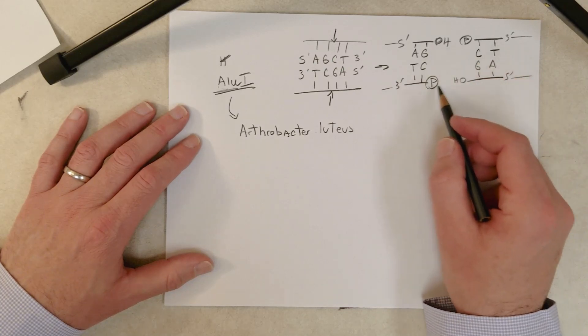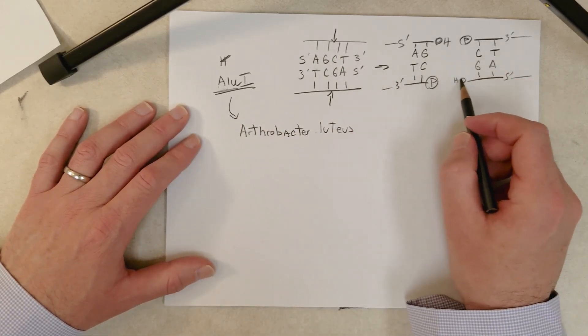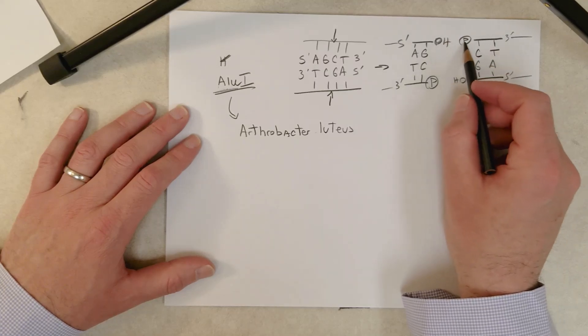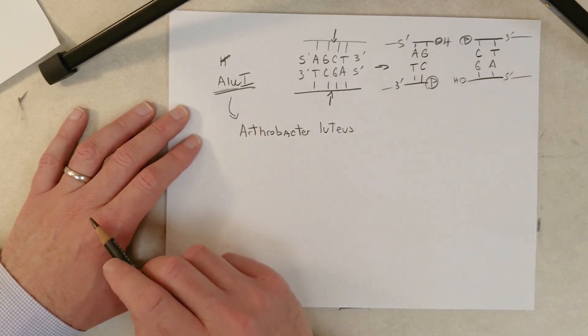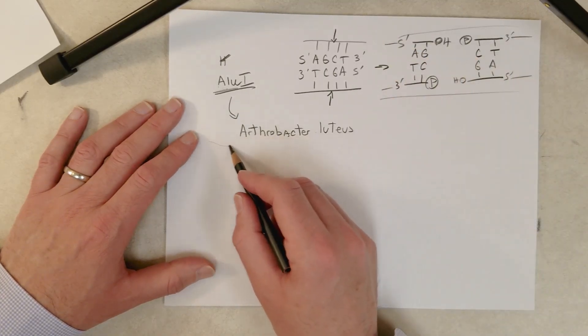And we can pretend this is the middle of a very long molecule right here, and we just cut it with AluI. So we have something that looks like this, and some of you are probably thinking, well, we could put this back together if we added DNA ligase. DNA ligase would take this and would link that phosphate to that hydroxyl, and this phosphate to that hydroxyl. Okay, so that's how AluI works.